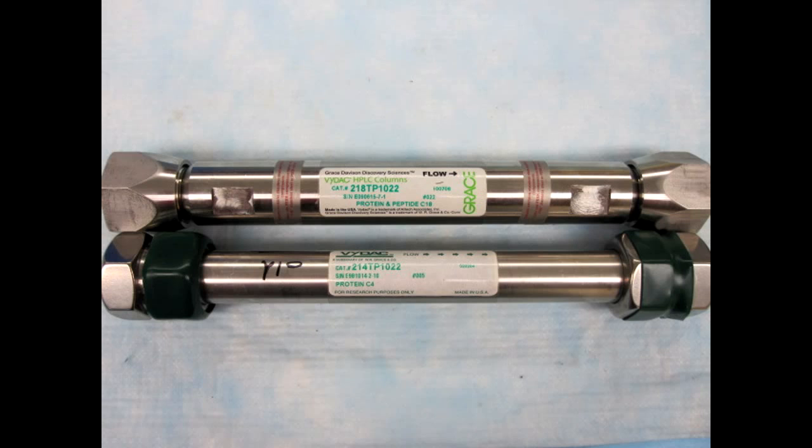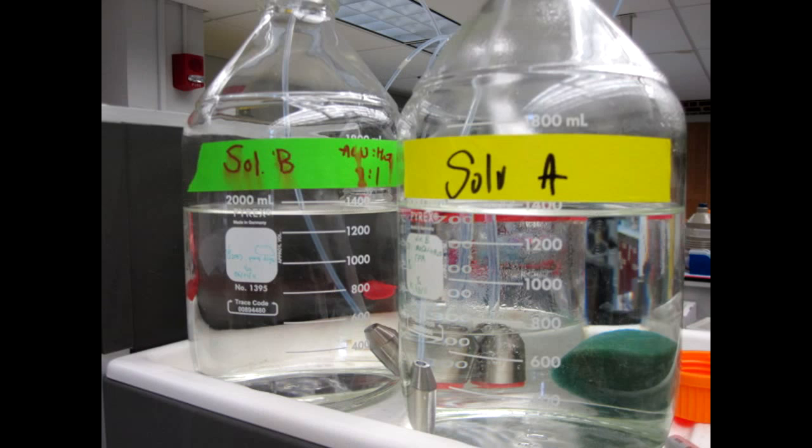For HPLC, our stationary phase includes various hydrophobic C4 and C18 reverse phase columns. We usually use C4 for large proteins and C18 for smaller peptides. For our mobile phase, we utilize the ability to make gradient mixtures of two distinct polar solvents in order to maximize the purification of our peptides.